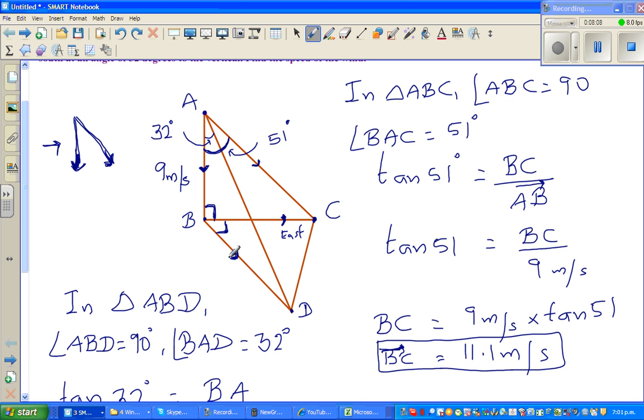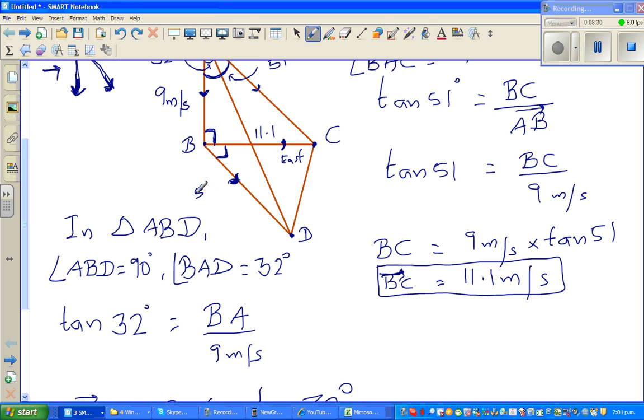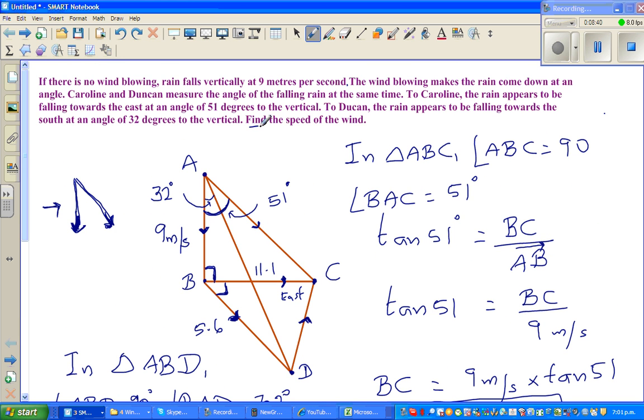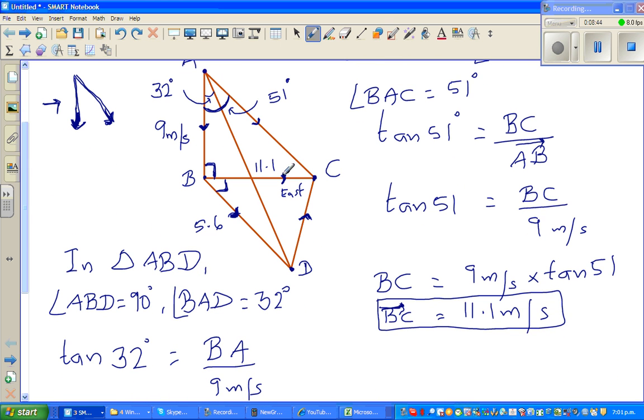Now let me go back to the diagram. This is for Duncan. The horizontal component of the rain that appears to him is, this is 11.1 and this is 5.6. This is the resultant. What they're asking is what is CD, find the speed of the wind. We are taking the two components of the wind, one for Duncan and one for Caroline, and these two are perpendicular to each other. The wind is probably moving like this. BCD is the ground. This is a vertical component and this is a horizontal component, and this is the resultant velocity of the wind.